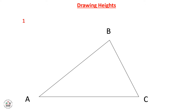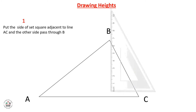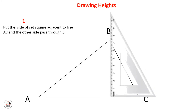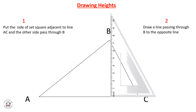For the first height, we need to put the side of the set square adjacent to line AC and the other side passed through B. Then we need to draw a line passing through B to the opposite side AC. And this is the first height.